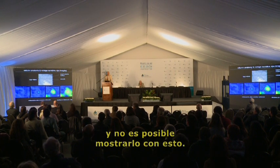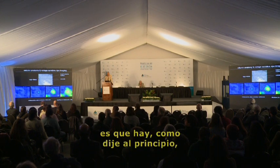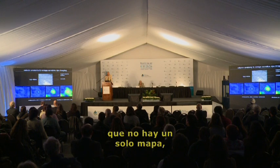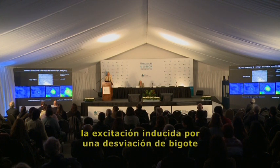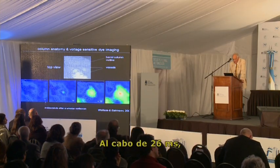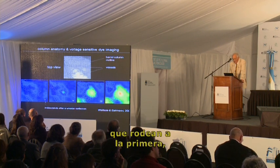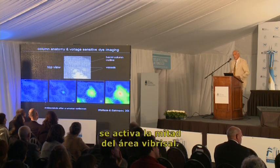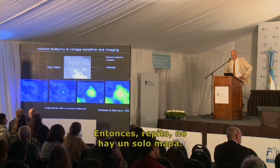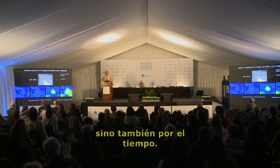An action potential is far too short to be reported by this method. What I would like to show you is that, as I said in the beginning, there is not a fixed map — the map is time dependent. After 16 milliseconds, the excitation induced by a whisker deflection is restricted to a single column. After 26 milliseconds, it has spread into the first ring of surround columns. And after 50 milliseconds, half of the vibrissae area is activated. So again, the map has to be defined not only by its input signals, but also by its time.